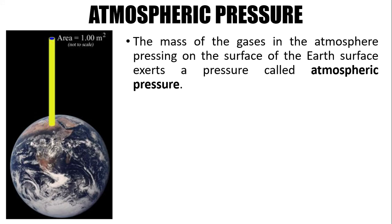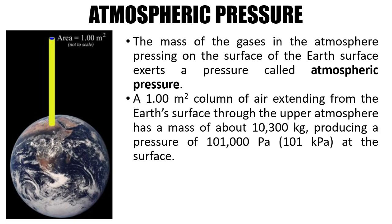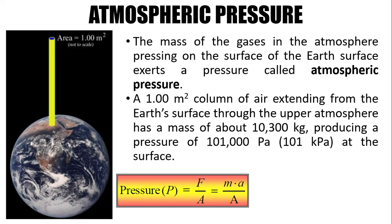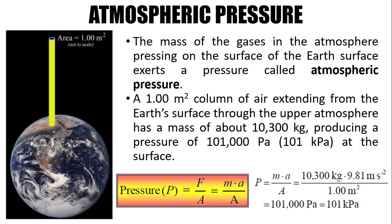Now we have this thing called atmospheric pressure. It's the mass of the gases in the atmosphere pressing on the surface of the Earth. A one-square-meter column of air extending from the Earth's surface through the atmosphere has a mass of about 10,300 kilograms, producing a pressure of 101,000 pascal, or 101 kilopascal at the surface. We know that pressure is equal to force over the area. And force can be derived from mass times acceleration. Putting all the numbers together, we will have this. And 101 kPa is the standard pressure. When we say that the gas is at standard pressure, or STP, which stands for Standard Temperature and Pressure, the pressure is 101 kPa.